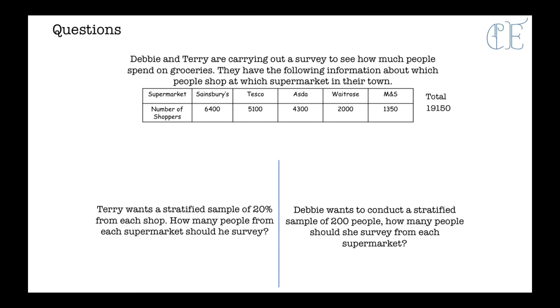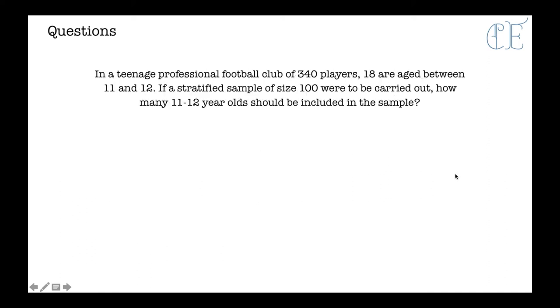But Debbie wants to conduct a stratified sample of 200 people. How many people should she survey from each supermarket? Well, we have a total of 19,150 people or shoppers. And for Terry, these should be our answers. And for Debbie, these should be our answers. So here, just checking that this adds up to 200. So this is Debbie's and this is Terry's answers here. So he's actually got a better sample because he's got more people.